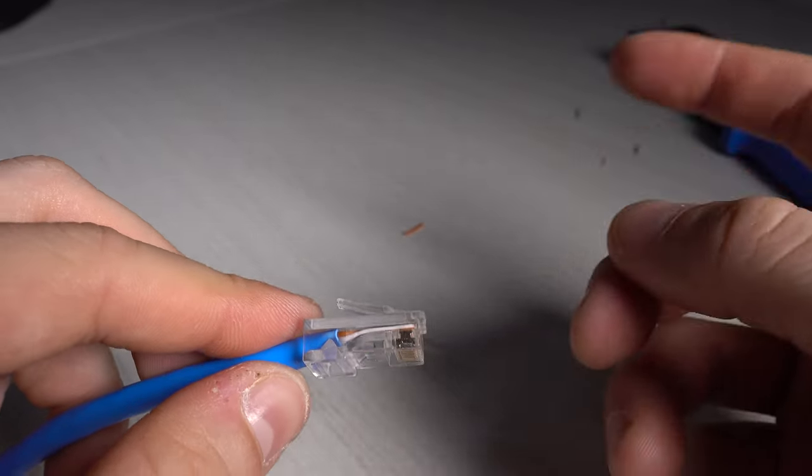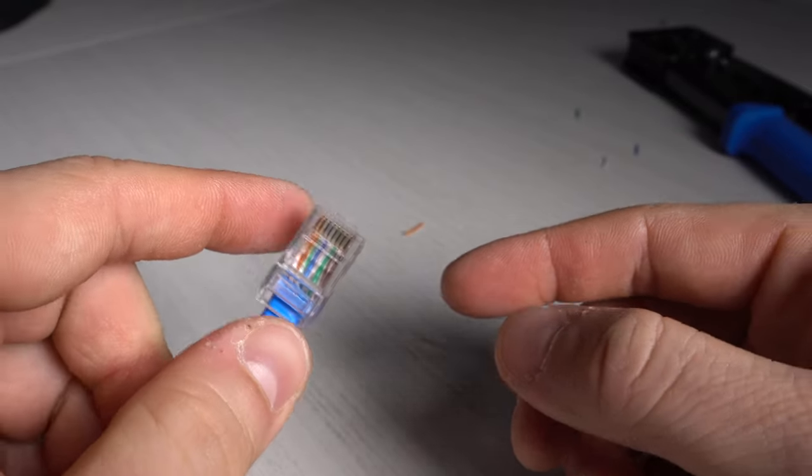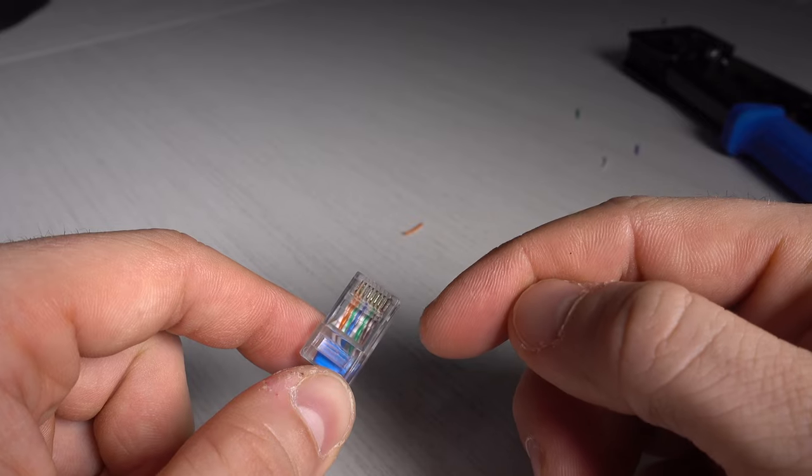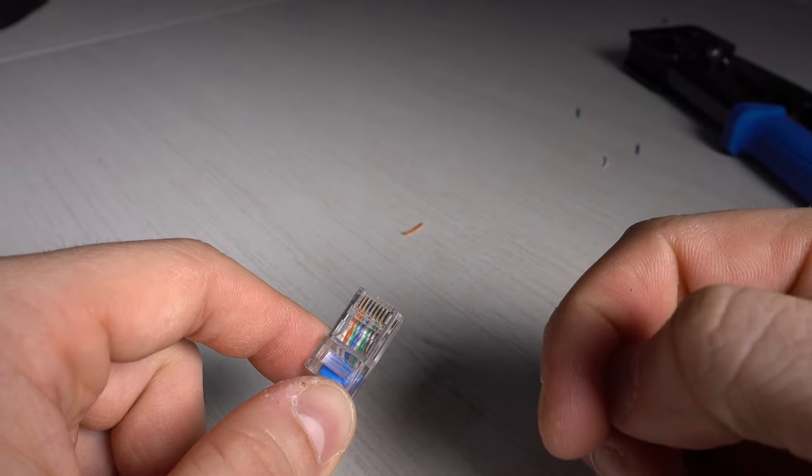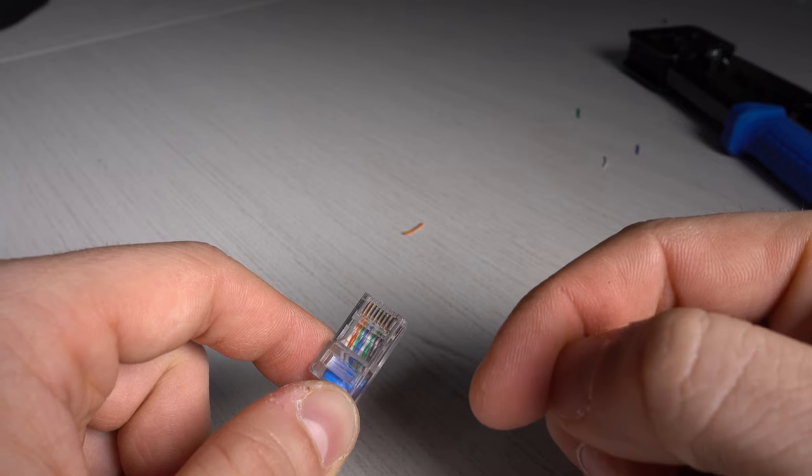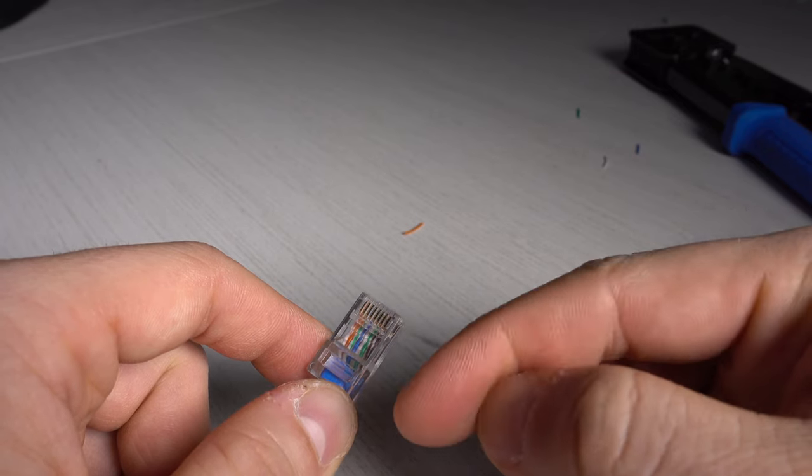So you have to do the same thing for both sides. Like I said, this is the B standard. If you want to do the standard A, you have to switch the orange for the green and the white-orange for the white-green.